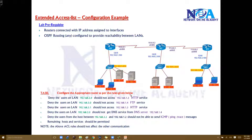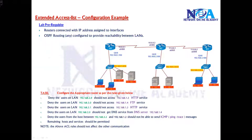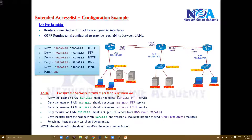If you try to see here, there is a 1.3 HTTP service that should be denied from the 2 network. So the shortlist here is: deny the traffic from 1.2 to 1.3 HTTP service. We have the HTTP service simulated here.